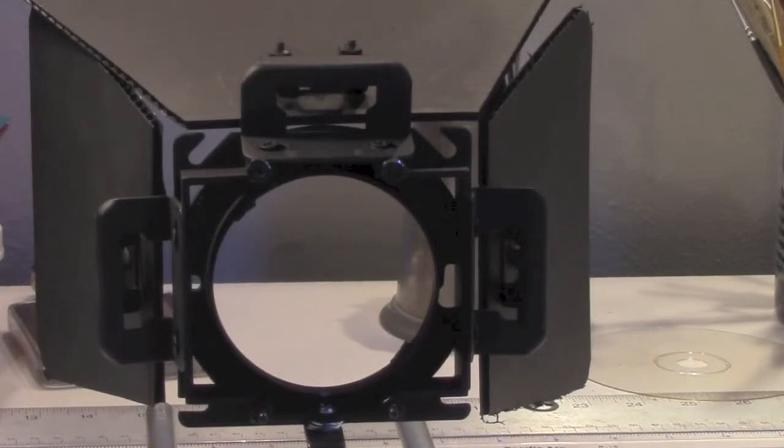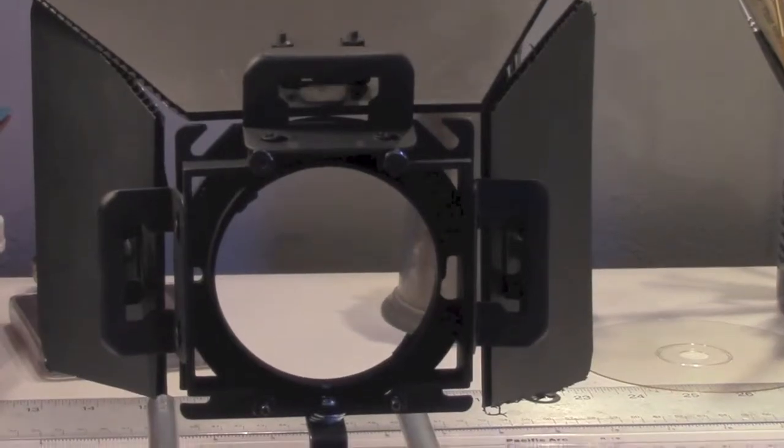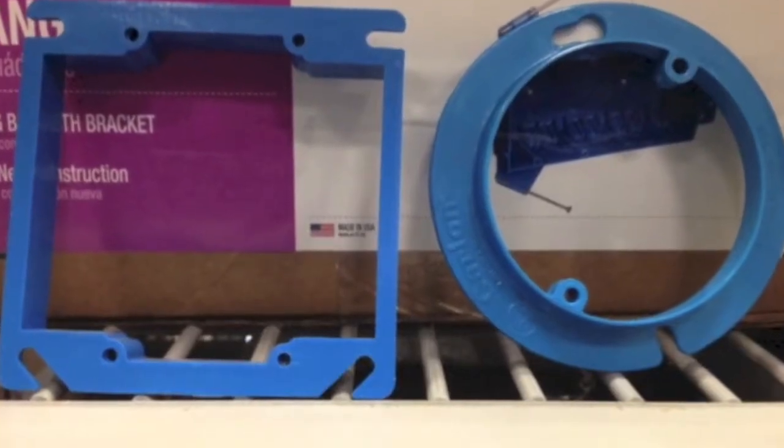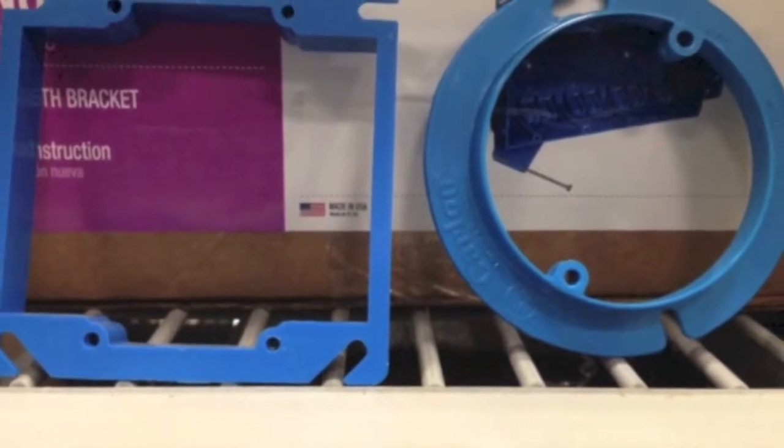To create the opening for the camera and mount the flags, I used plastic electrical parts. A box frame and a round piece may be designed for mounting a ceiling light. I don't know.